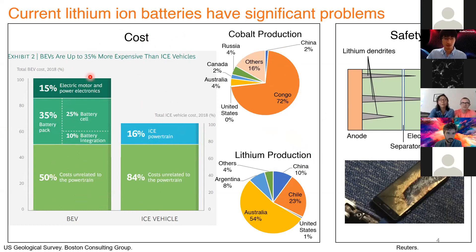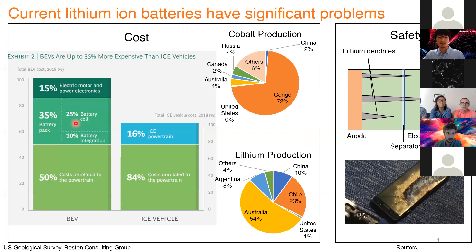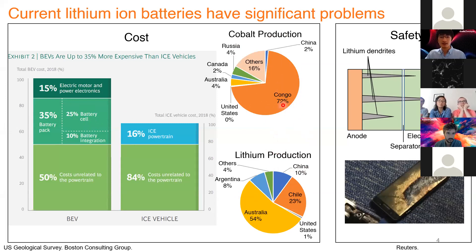If we can eliminate a lot of the costs of making the battery, we can make electric vehicles cheaper, so more people would adopt them. These pie charts represent lithium and cobalt production over the world. Most production is dominated by one or two countries — Congo for cobalt and Australia and Chile for lithium. This concentration not only increases cost but also has political implications, and in Congo's case, humanitarian issues related to questionable child labor practices. Eliminating lithium and cobalt would address both the cost and the geopolitical concerns.